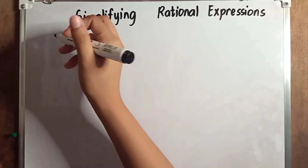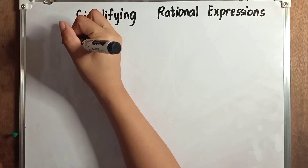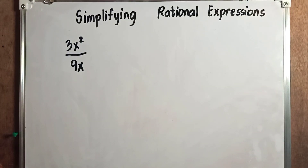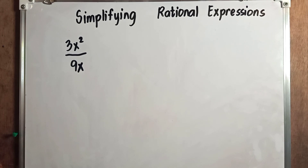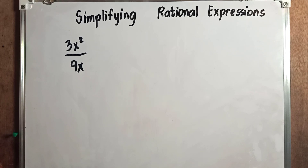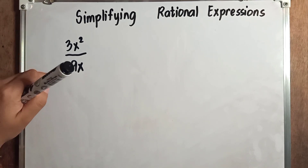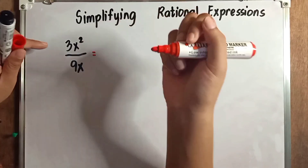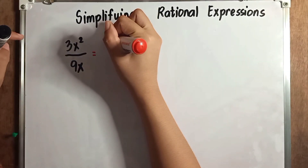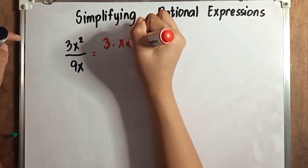For our first example, you are asked to simplify 3x squared over 9x. We need to factor both the numerator and the denominator, then divide by their common factor. We will first factor out the numerator, 3x squared. It will become 3 times x times x, because x squared means two x's.